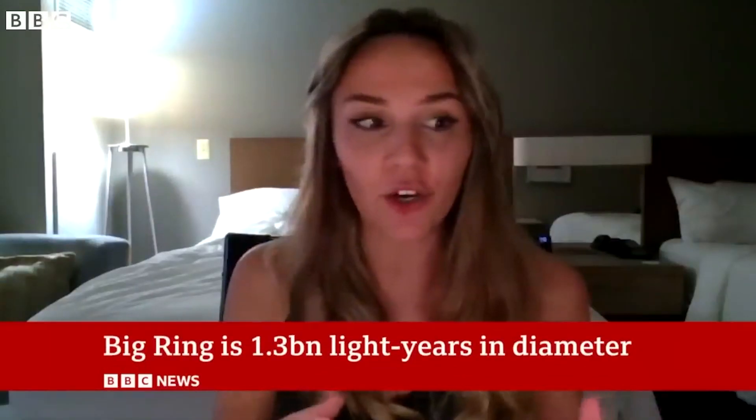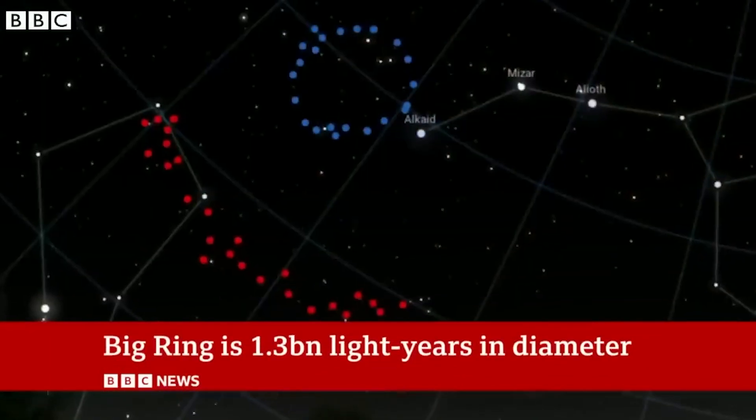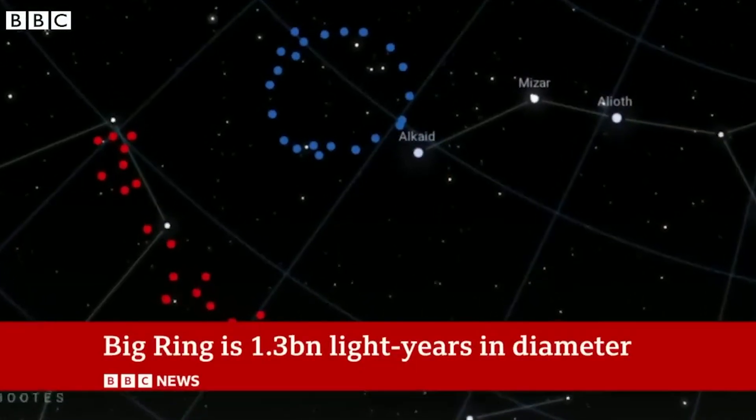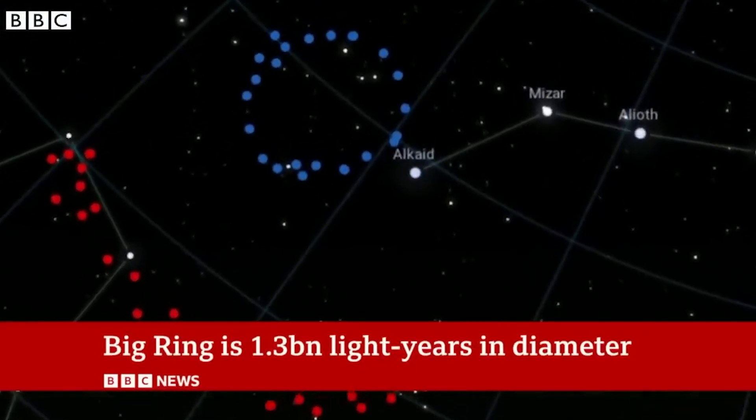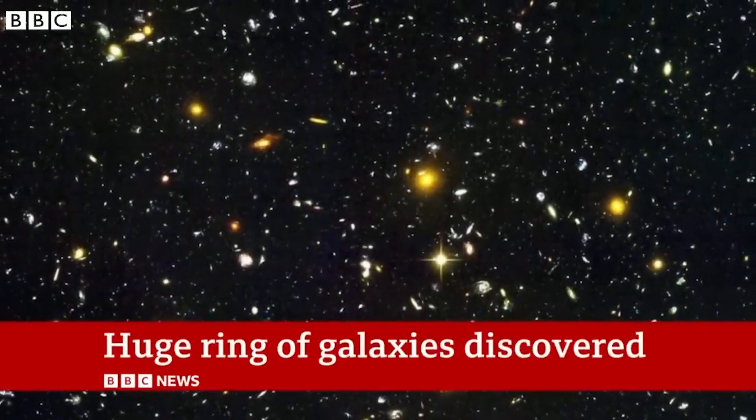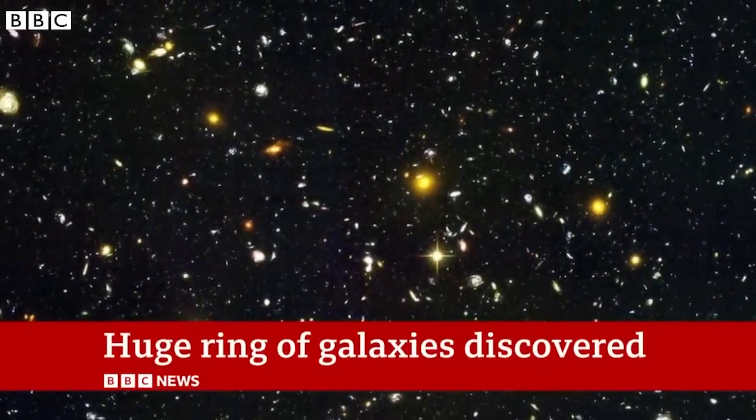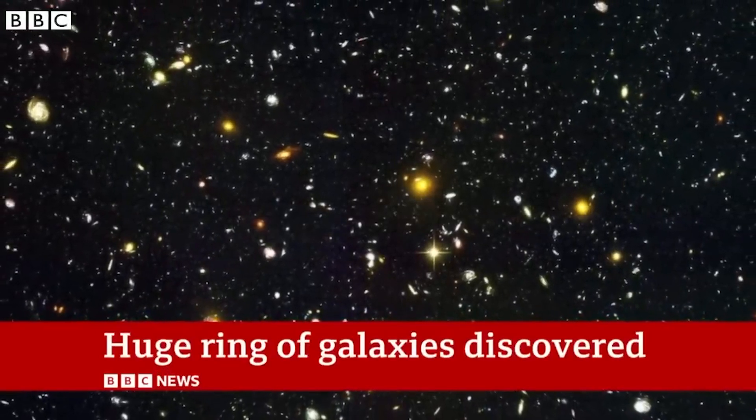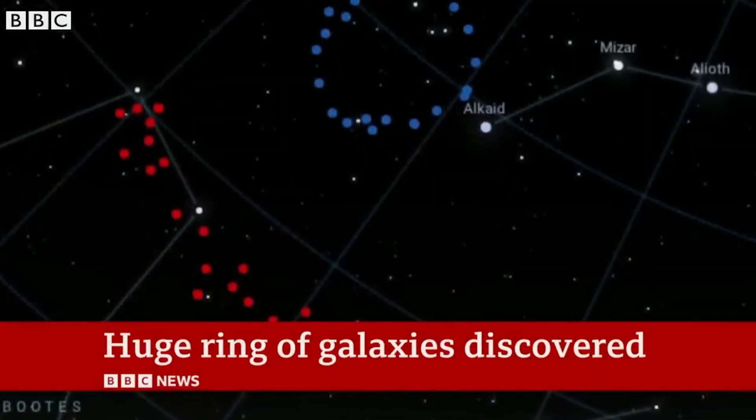So this essentially puts a limit on how big we should find structures existing. When we find these large-scale structures, these huge structures like the Big Ring or the Giant Arc, these are so big that we're now not seeing this statistical homogeneity. We're not seeing this smoothness in the universe.